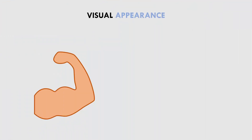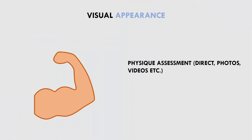The first method of assessment is visual appearance. This refers to looking at your physique either in a mirror, photo, or video. While visual appearance is the most subjective form of assessment, it is also the most direct. If we think about it, visual appearance is the primary outcome we are trying to improve, so all other measures of body composition are technically indirect, even though they might be more accurate.